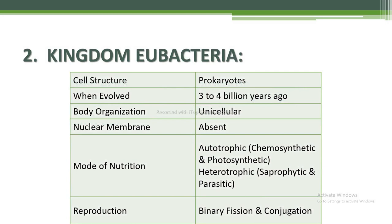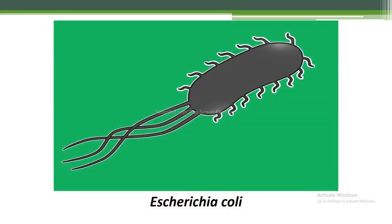Next is the kingdom Eubacteria. Cell structure: prokaryote that evolved 3 to 4 billion years ago. Body organization: unicellular, nuclear membrane absent. Mode of nutrition: autotrophic — chemosynthetic and photosynthetic; heterotrophic — saprophytic and parasitic. Reproduction: binary fission and through conjugation. An example of this kingdom is E. coli (Escherichia coli) as shown in the figure.